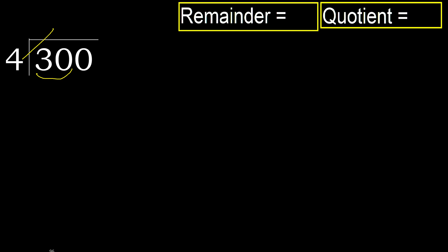But not greater. 4 multiplied by 8 is 32, which is greater. Multiplied by 7 is 28, which is not greater. 30 minus 28 equals 2.